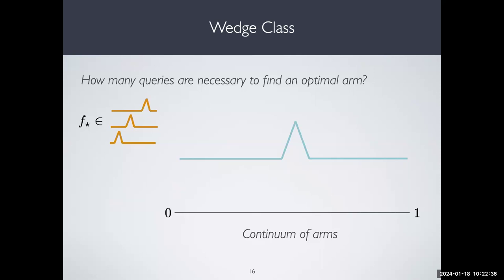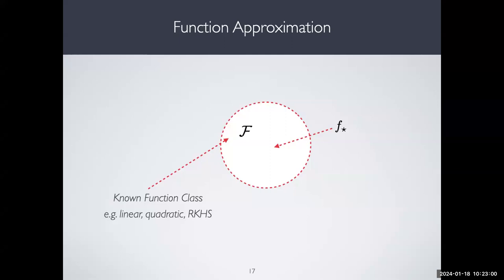When I say function approximation throughout this talk, I mean we're not assuming a multi-arm bandit setting or even a linear one — we're thinking about some arbitrary function class F that contains F-star. Things that F could be include linear functions, quadratic, the wedge class, maybe an RKHS, multi-arm bandits. We assume that F-star is in F — it is realizable.